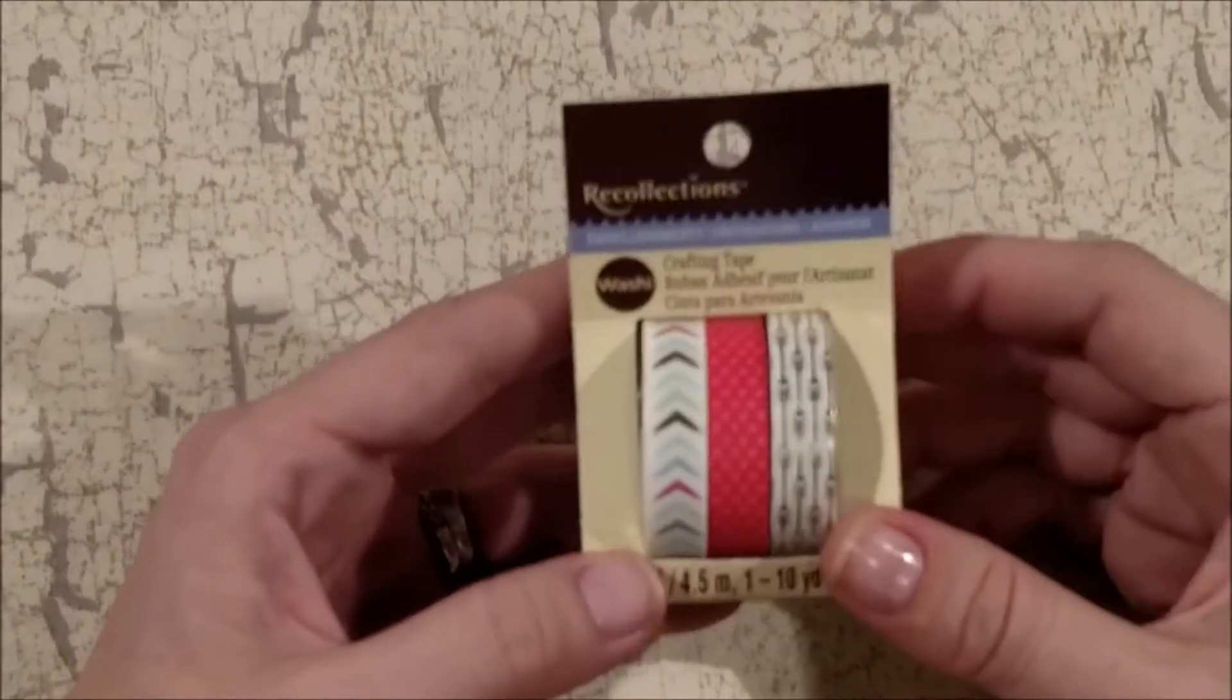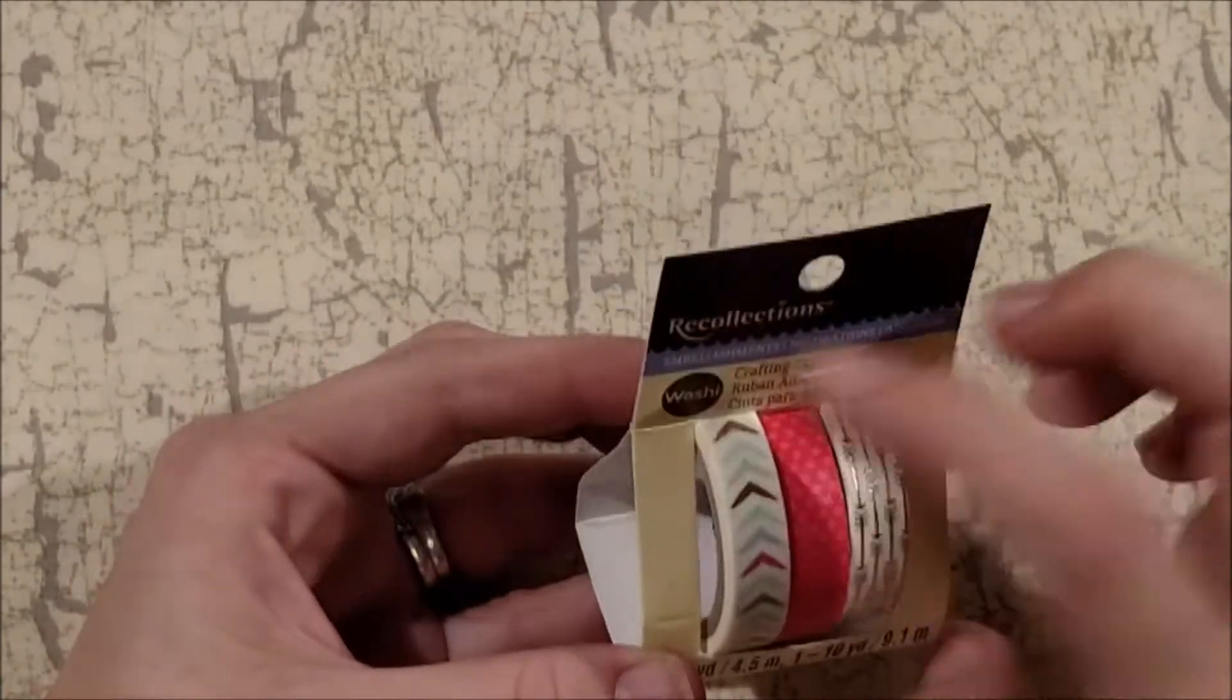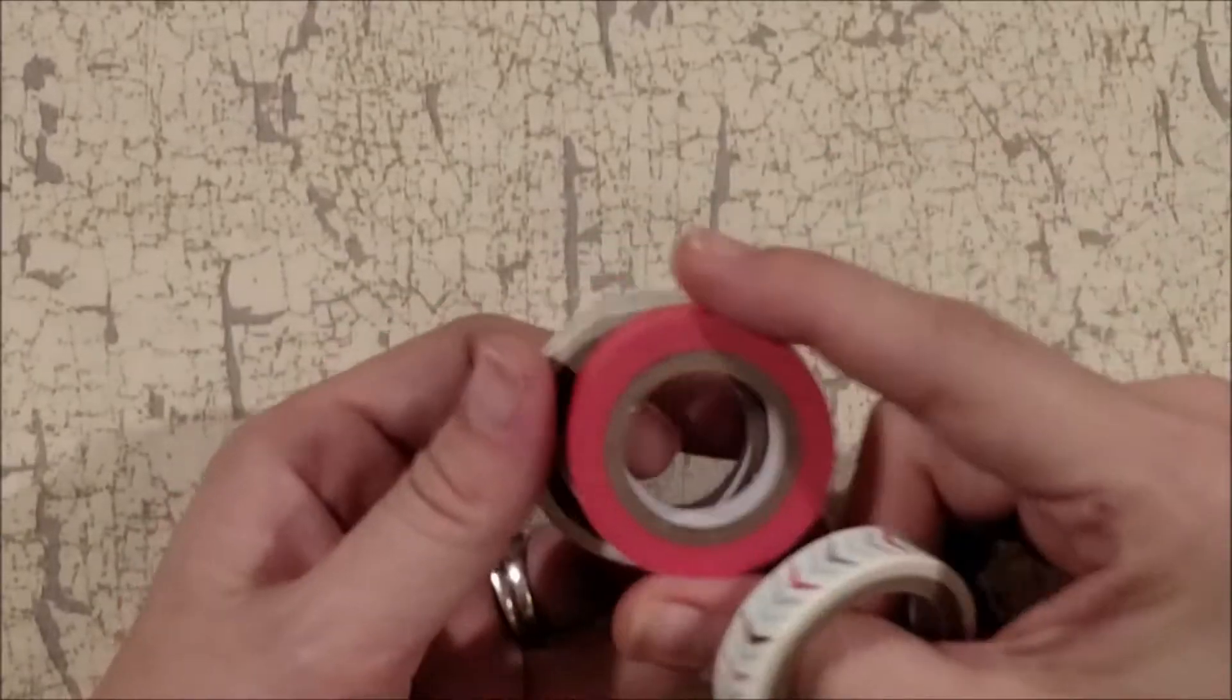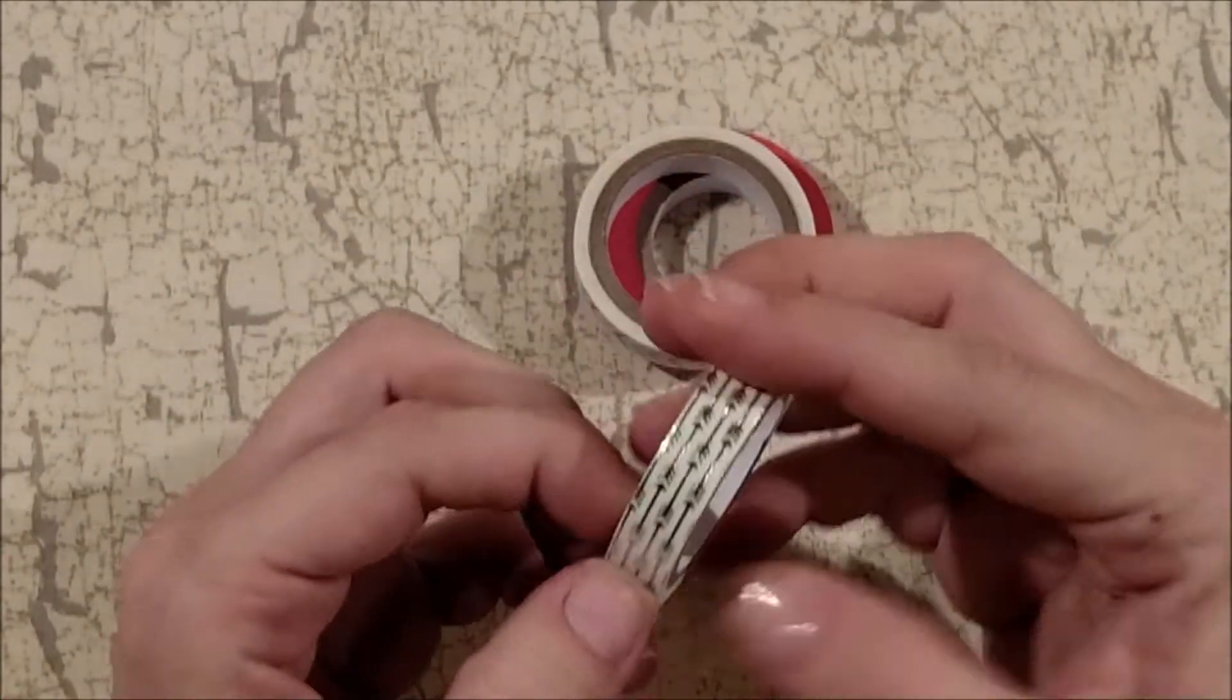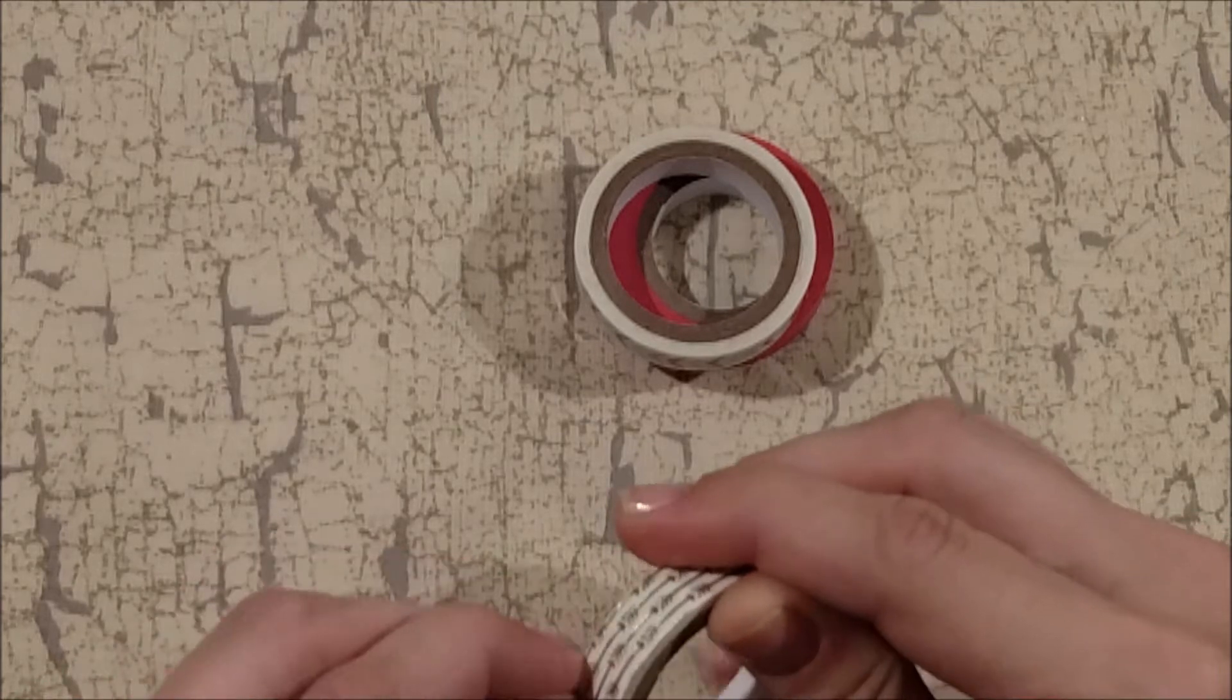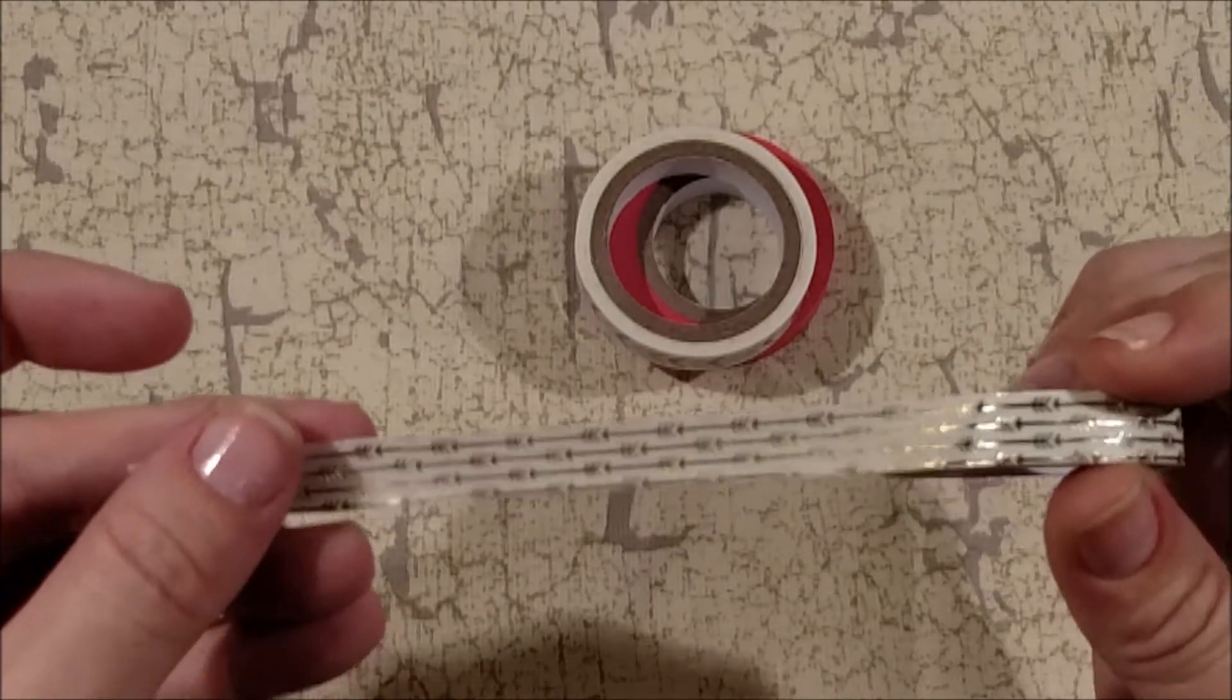I spent $18. First up I decided to grab this washi which is this like corally orangey red polka dot, the chevron arrows with the gold foil, and then the gold foil arrows. Now I will tell you that the non-foil has a ton of product on it and then here's the foil. You see the difference? So there is a big difference in the amount of washi that you get if it's foiled.